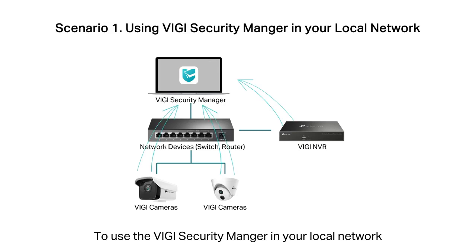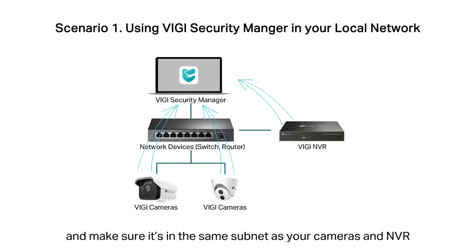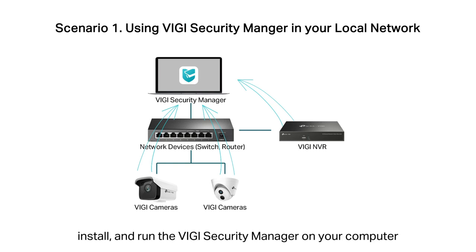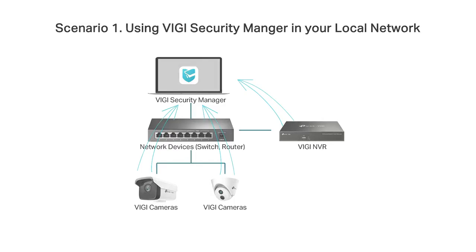Scenario 1: To use the Vigi Security Manager in your local network, connect your computer to the network devices and make sure it's in the same subnet as your cameras and NVR. Next, go to the TP-Link Download Center, then download, install, and run the Vigi Security Manager on your computer.